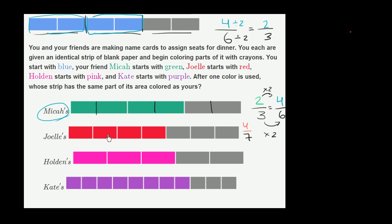She's colored in the same number, but the size of each of her strips is different. So four-sevenths is definitely different than four-sixths. So we can rule Joelle out.